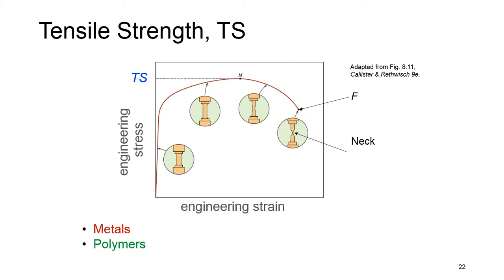Necking acts as a stress concentration, so we have huge stress concentration and finally see breakage in the necking area. In metals, fracture occurs when noticeable necking starts, and in polymers it occurs when polymer backbone chains are aligned and about to break.